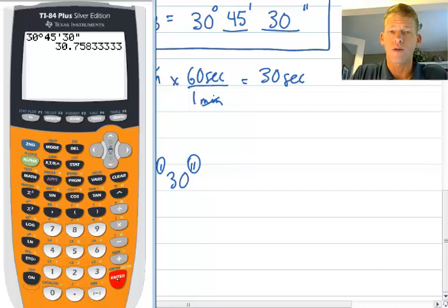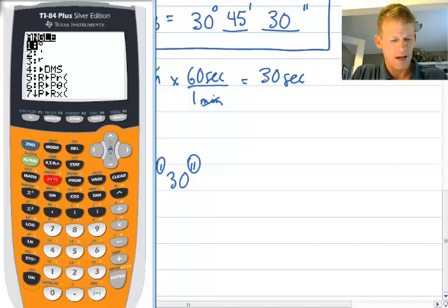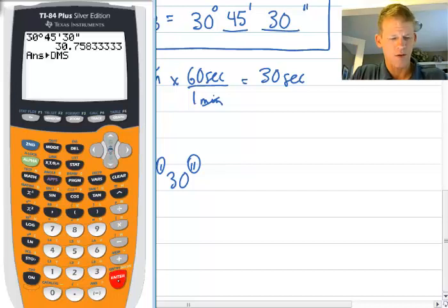Now going backwards is much easier. Go to the angle symbol - always hit shift and then apps. If you look at the fourth choice, it has the arrow showing going back to degree minute seconds. I'm going to go down to choice four and hit enter. Now it says I'm going to take my answer that was in decimal degrees and convert it back to degree minute seconds. I hit enter and there you go.